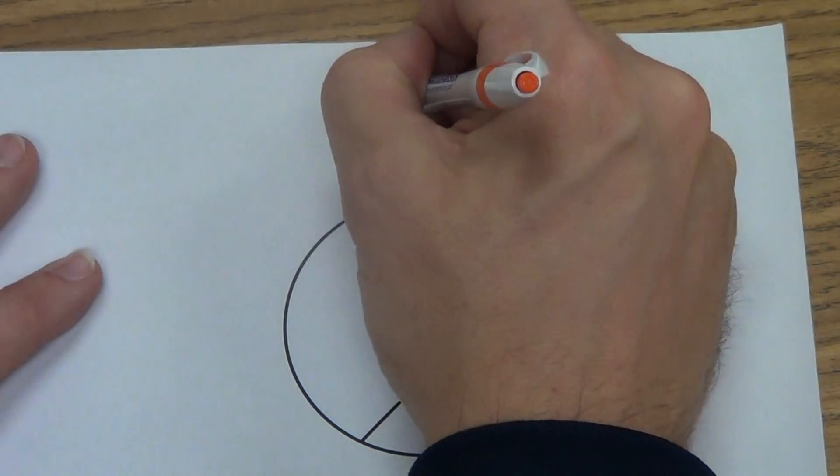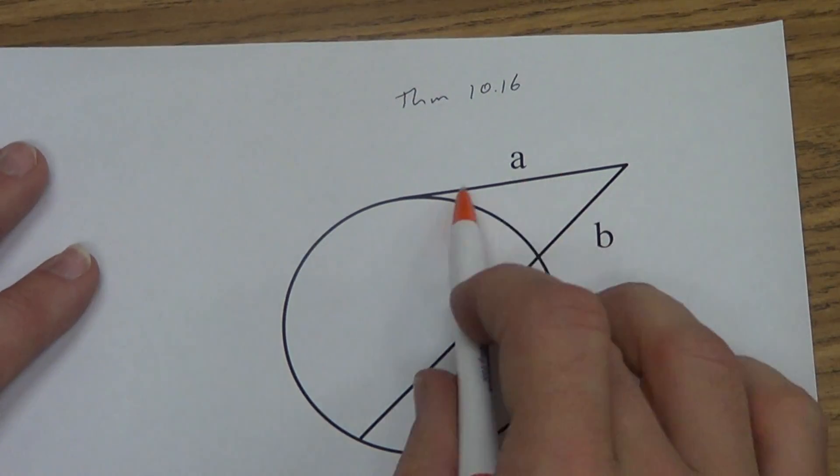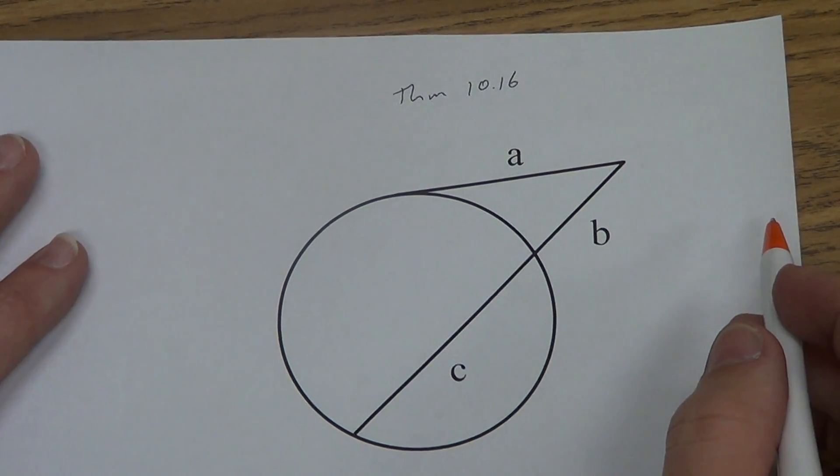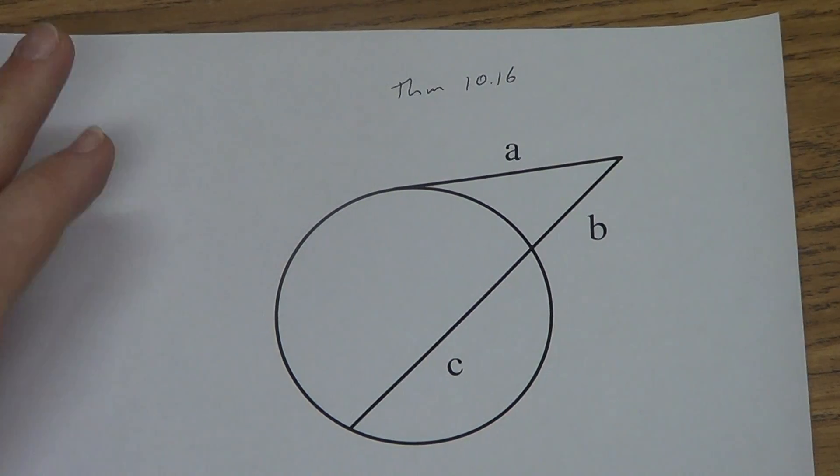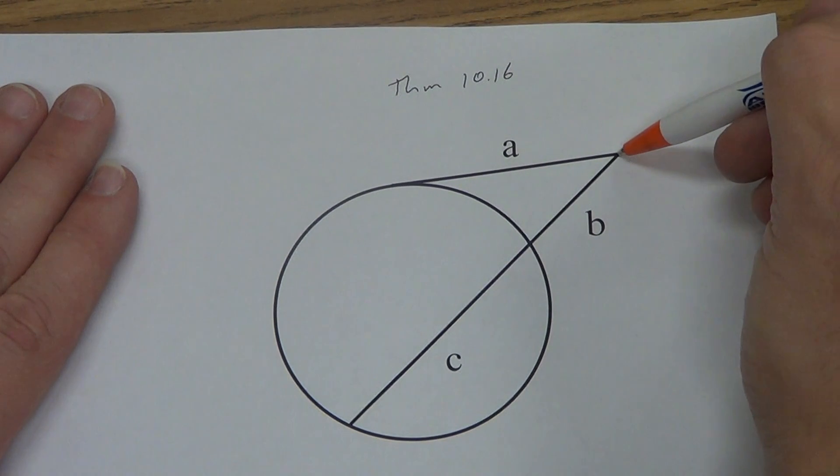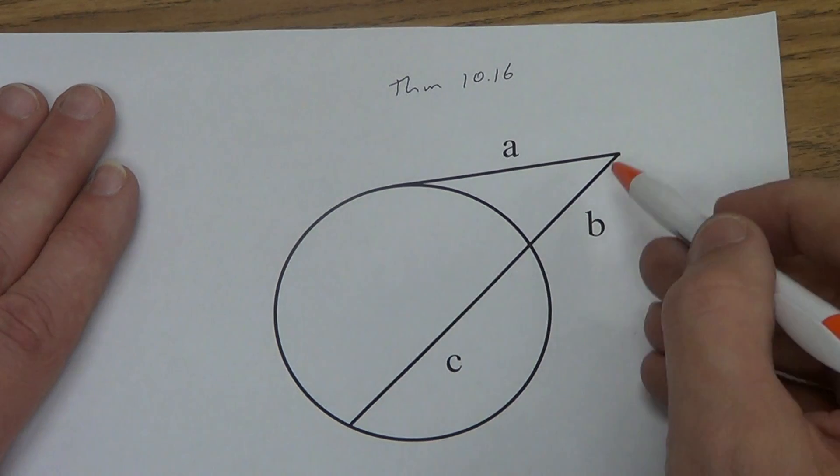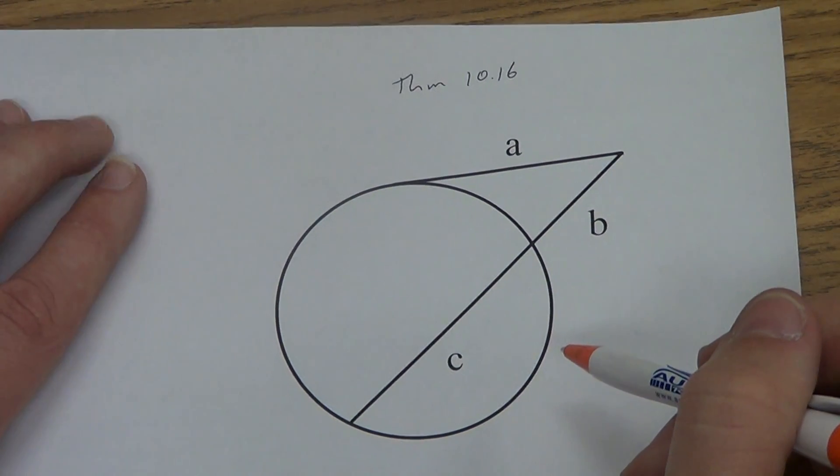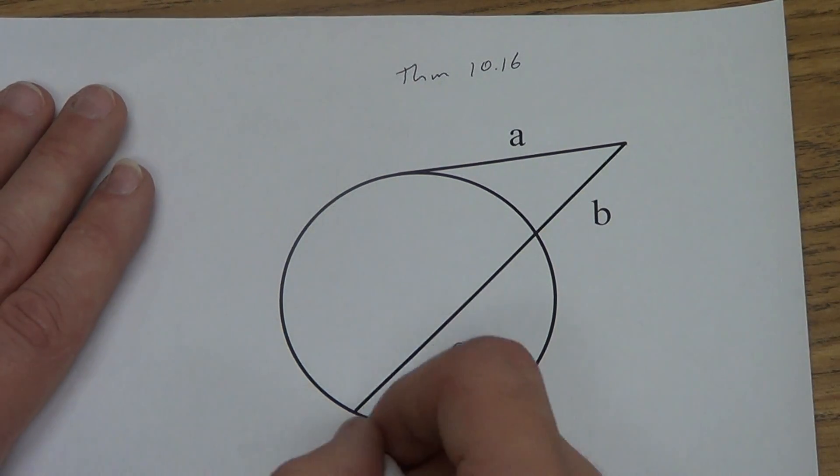And then your third theorem is theorem 10.16, and it looks kind of the same as 10.15 with a slight change. And that's up here, that we don't have a secant segment anymore, we have a tangent segment. So this one's about four and a half lines long in your book. It's kind of long again. If a secant segment, that's this one, and a tangent segment intersect at a point outside the circle, or they say share an endpoint outside a circle, then the product, once again we're multiplying, of the lengths of the secant segment and its external segment equals the square of the length of the tangent segment. What in the world? Same idea though.